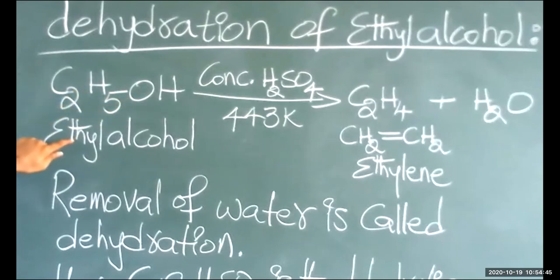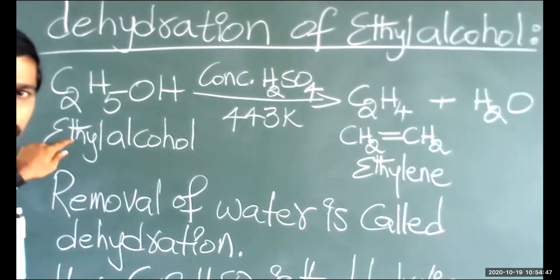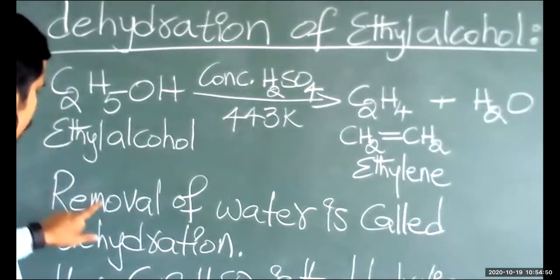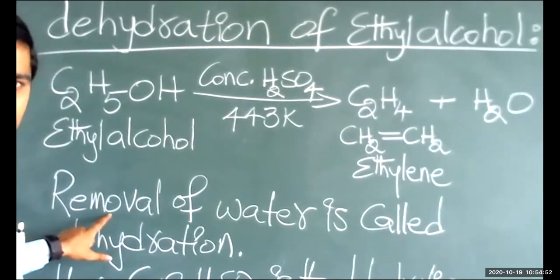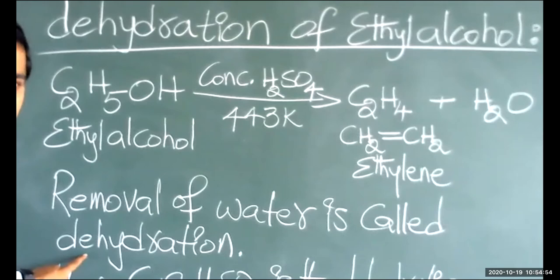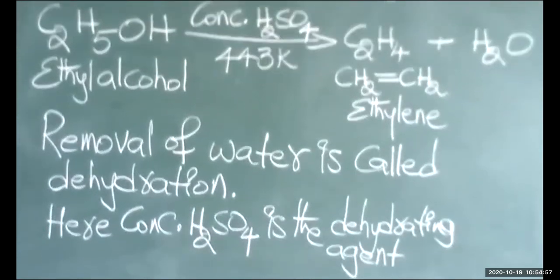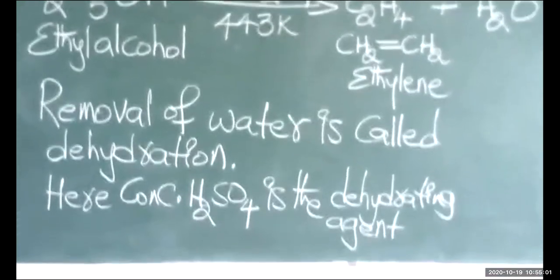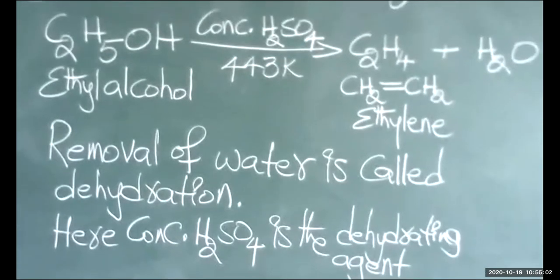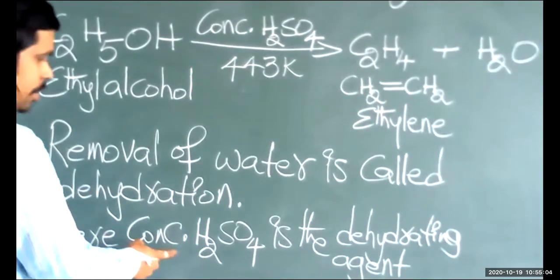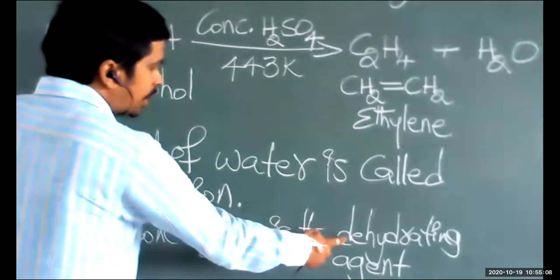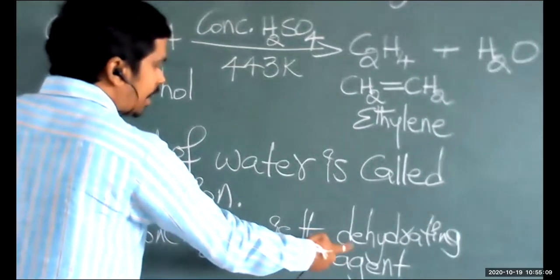C₂H₅OH is ethyl alcohol, and it is undergoing dehydration. Dehydration means removal of water. To carry out the dehydration, we are using concentrated H₂SO₄. The concentrated H₂SO₄ in this reaction is acting as a dehydrating agent.